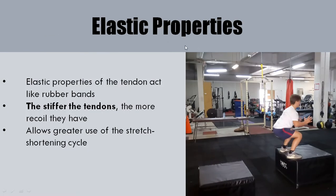The elastic properties of the muscle-tendon unit — particularly the tendon — act like rubber bands. The stiffer the tendon, the more recoil it has. If you have a stiff, thick elastic band and stretch it as tight as possible, it will have huge recoil. But a slack, worn-out elastic band will have far less recoil. The stiffer the tendon, the more we can use the stretch shortening cycle in activities like jumping and running.